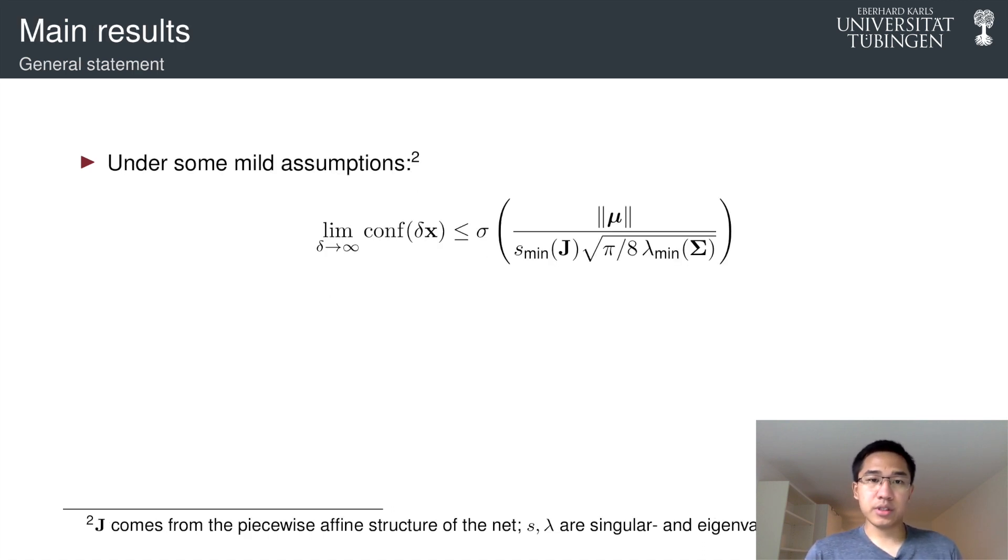So this is our main result, which says that under some mild assumptions, the confidence far away from training data, the confidence of δx, remember that we scale our input point with some δ, and as δ goes to infinity, we show that the confidence actually goes to some quantity that does not depend on the input x.